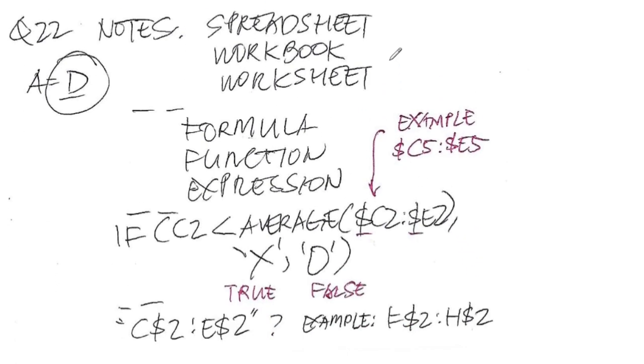So again we have formula, we have a function, we have an expression, and we can use the dollar sign to signify that the letter doesn't change but the number beside it could change based on the location of the cell where the equation is put.